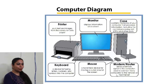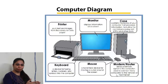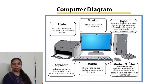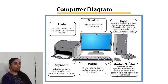So now you know what components are in a computer system: there is a monitor, a CPU, a keyboard, a mouse, a printer, and a modem. I want you to draw this diagram in your files and you should know what each particular component is and what its function is.